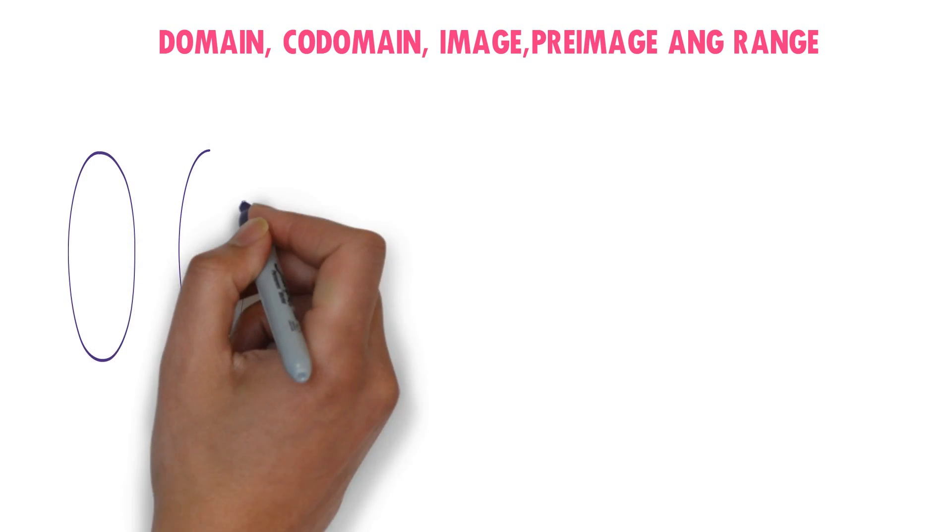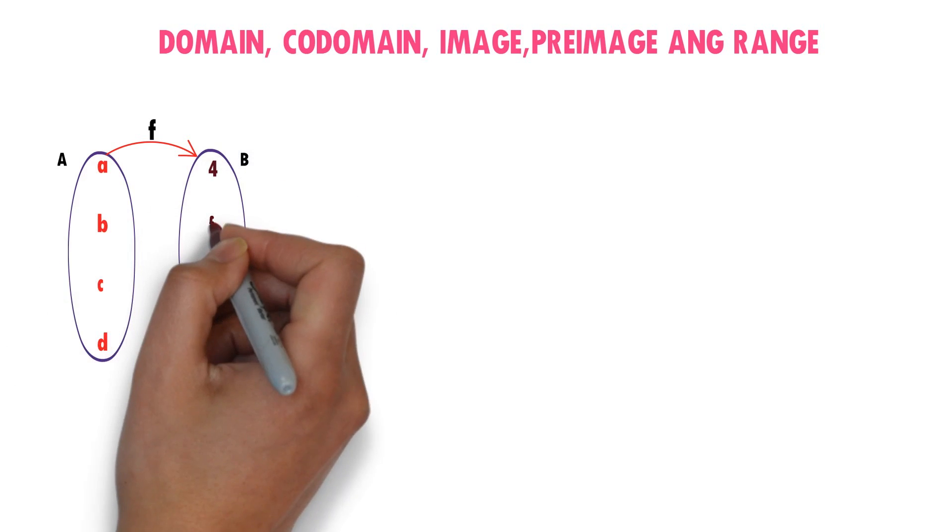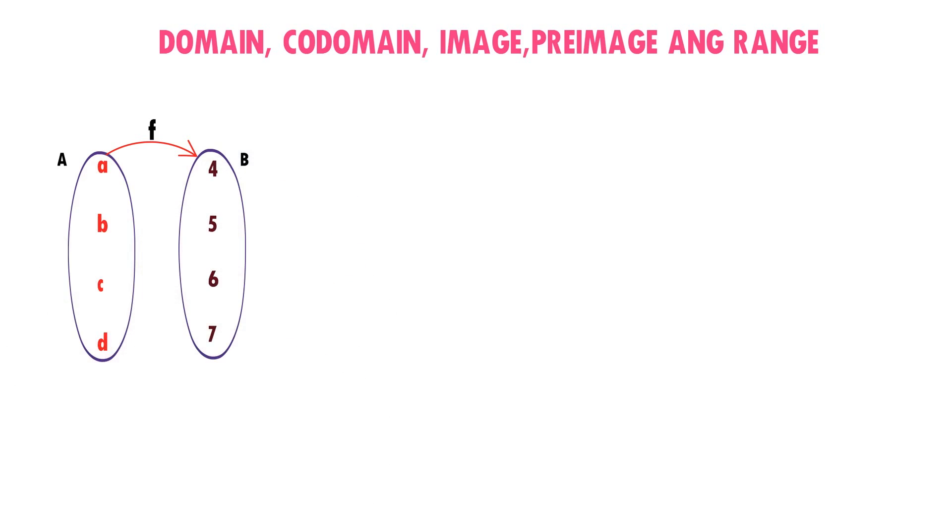Consider a relation F from A to B. The set A contains elements a, b, c, d. The set B contains elements 4, 5, 6, 7.